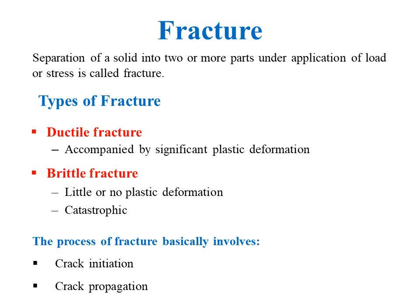Ductile fracture undergoes an appreciable plastic deformation before actually breaking apart. Plastic deformation is permanent deformation, whereas brittle fracture occurs with elastic deformation, which is non-permanent or temporary deformation.